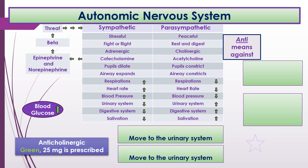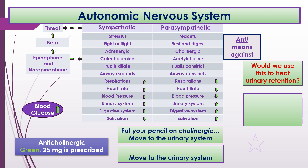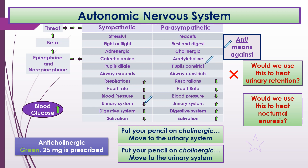Here's another medication we haven't heard of: the anticholinergic green 25 milligrams. We know anti means against. Would we give this to treat urinary retention? Put your pencil on cholinergic and move to the urinary system — the urinary system slows down, so no, we wouldn't use this to treat urinary retention. Would we use this to treat nocturnal enuresis or bed wetting? Move to the urinary system — that goes down, so yes, we would use it to treat bed wetting.